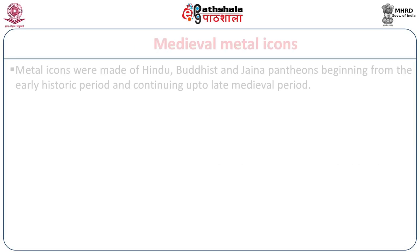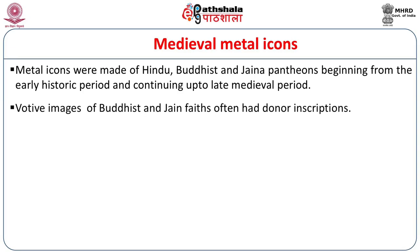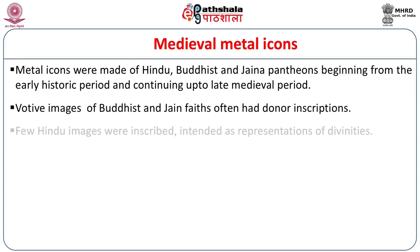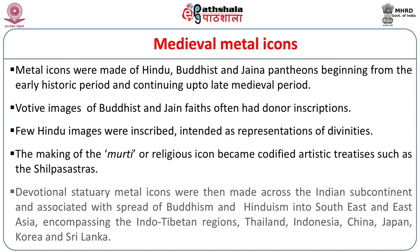Coming to the medieval metal icons, they were widely cast under the Hindu, Buddhist, and Jain pantheons beginning from the early historic period and continuing up to the late medieval period. Votive images of Buddhist and Jain faiths often had donor inscriptions and were probably carried around as votive images, while few Hindu images were inscribed since they were intended mainly as representations of divinities. The making of murtis or religious icons became codified in artistic treatises such as the Shilpa Shastras. Devotional statuary metal icons were made across the Indian subcontinent and were associated with the spread of Buddhism and Hinduism into Southeast Asia, East Asia, the Indo-Tibetan regions, Thailand, Indonesia, China, Japan, Korea, and Sri Lanka.